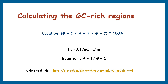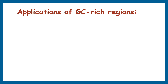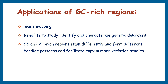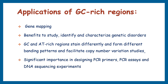Coming to the applications of GC-rich regions: our genome has wide varieties of information and sequences, and every different sequence provides different information with varied utility. For example, short tandem repeats are useful for DNA fingerprinting, while GC-rich sequences are a huge part of gene structure and are useful in gene mapping. Analysis of CpG island-rich GC regions also benefits the study, identification, and characterization of genetic disorders. In cytogenetic studies, GC and AT-rich regions stain differently, forming different banding patterns that facilitate copy number variation studies. GC-rich sequences also have significant importance in designing PCR primers and PCR assays.